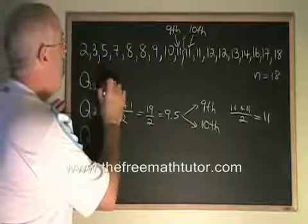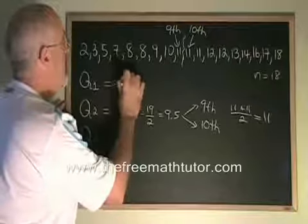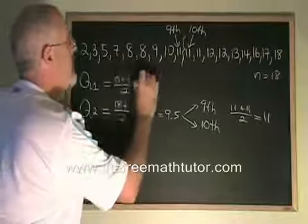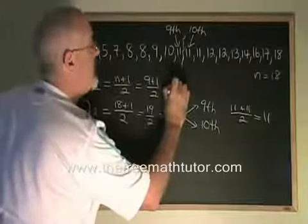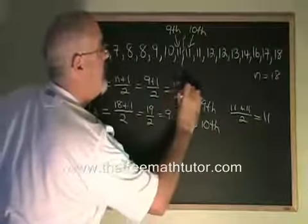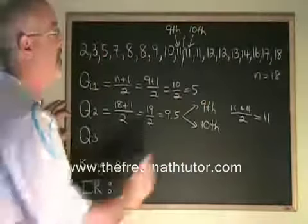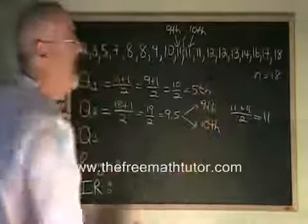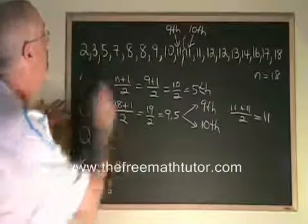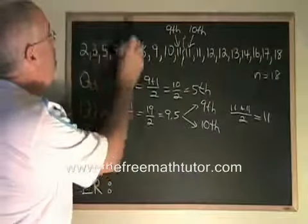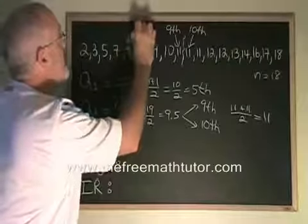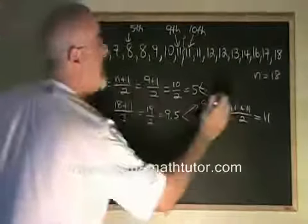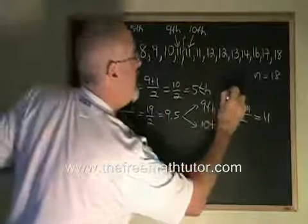Our n plus 1 over 2 formula gives us 9 plus 1 over 2, which gives us 10 over 2, 5. The 5th data value is going to be our q1, 1, 2, 3, 4, 5. Our 5th data value is here, it's this 8, so our q1 is 8.